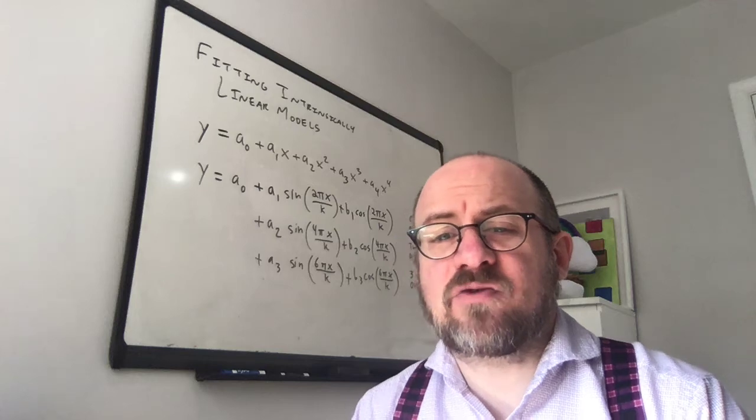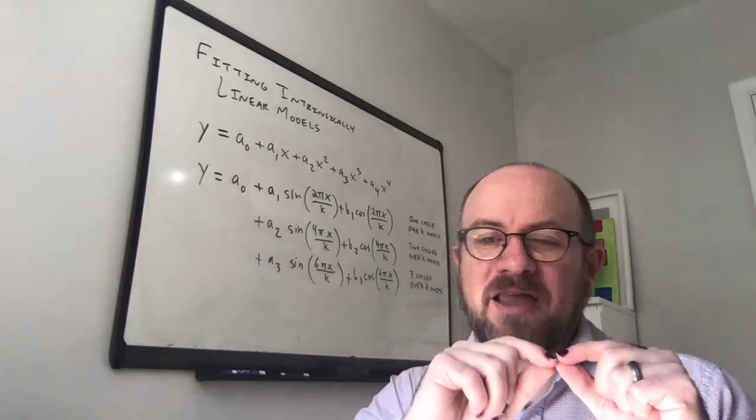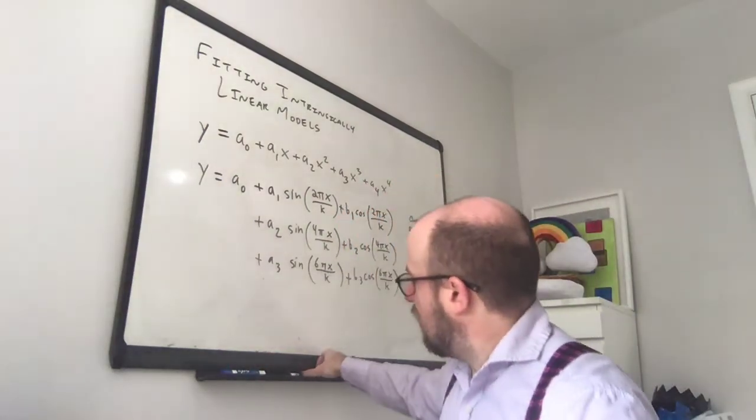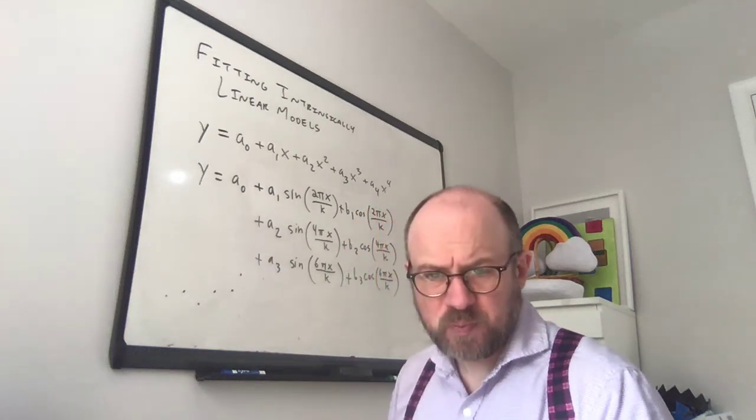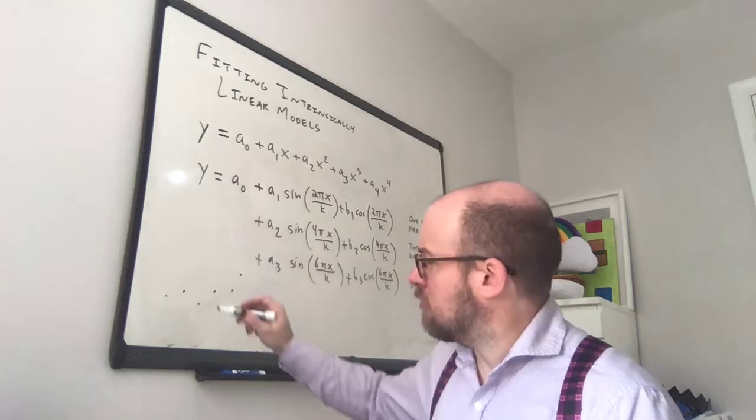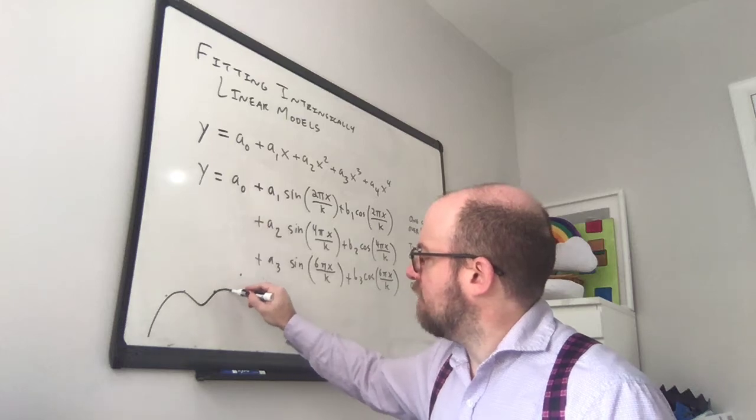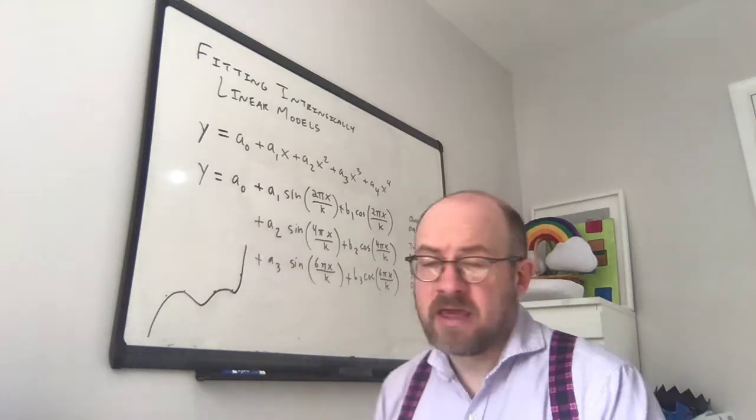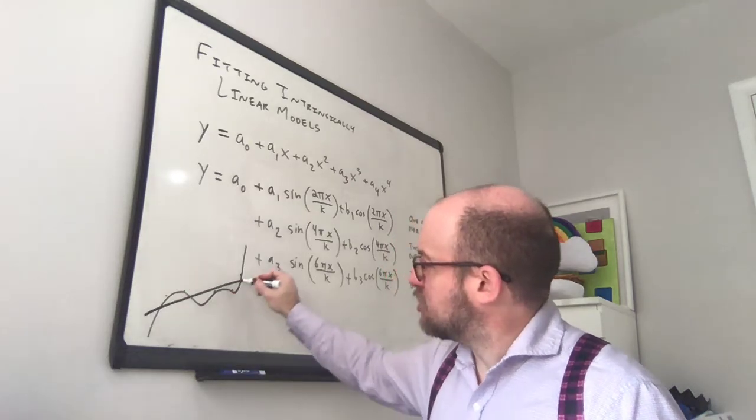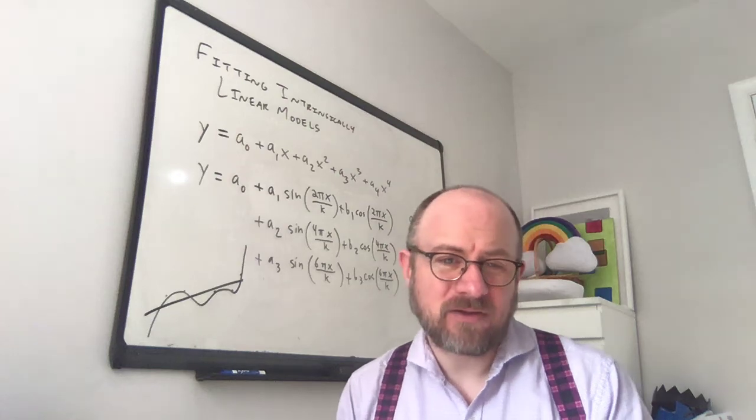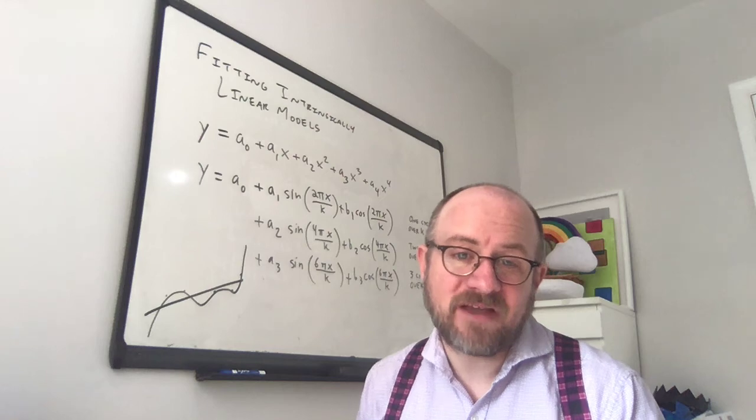Because as you start to fit higher degree polynomials, the problem is that while they might fit the data, if you have data points like this, you can fit a polynomial exactly through these points if you take arbitrarily high degree. The problem is, is that a lower order polynomial might actually be a better fit for the model, right? Because this might just be random error that's accumulating, and so a linear model might be the better fit for this particular data.